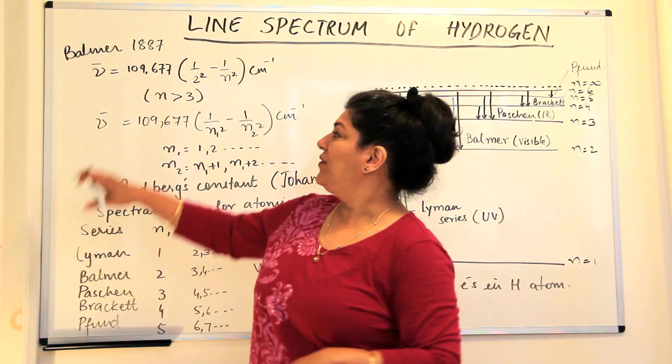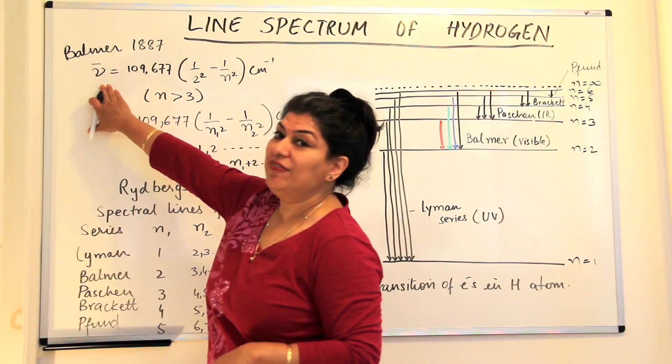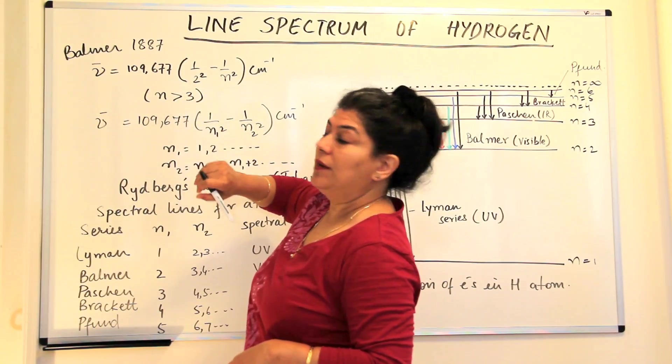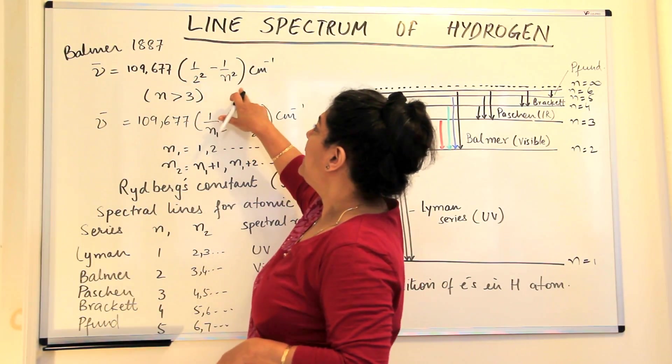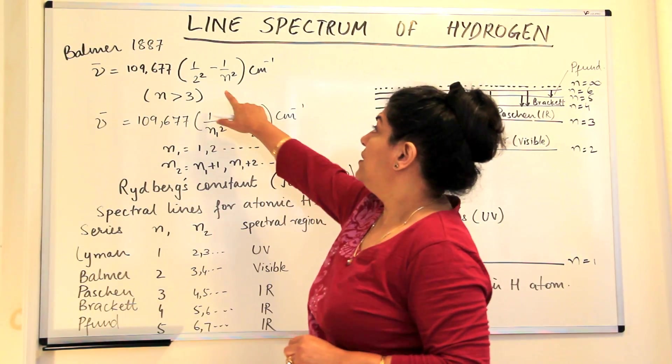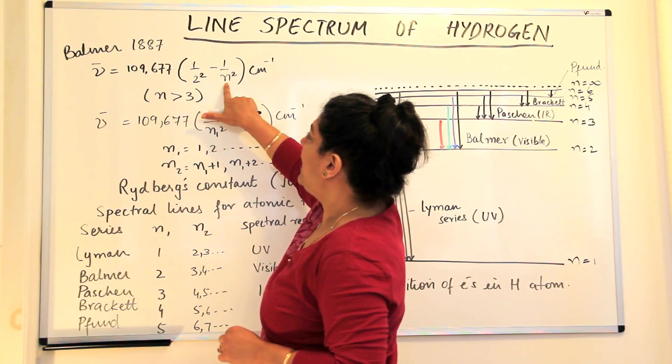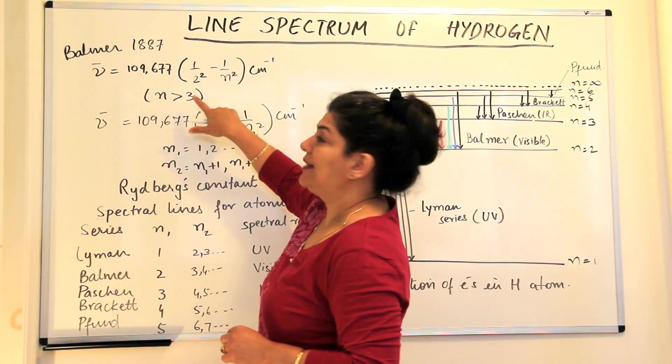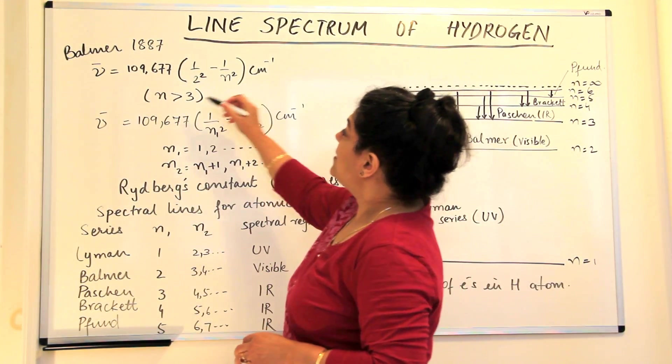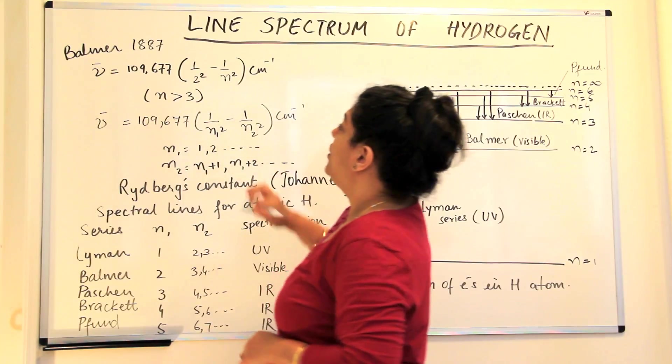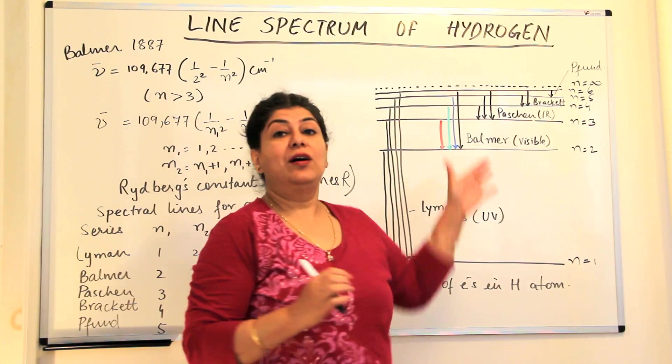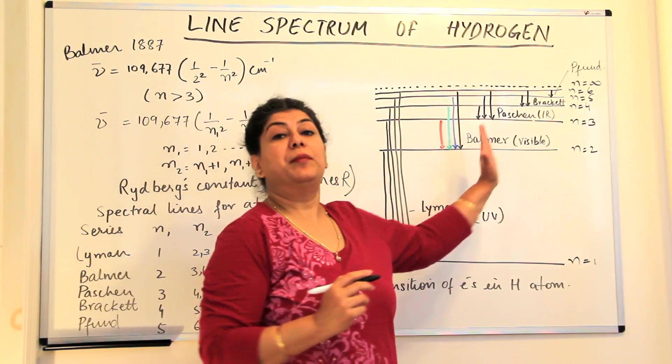The relationship is that wave number equals 109,677 (1/2² - 1/n²) cm⁻¹, where n is anything greater than 2, that is 3 or greater. So this is the formula that was given by Balmer, which very nicely explained the Balmer series, and he could calculate the wave number from this formula.